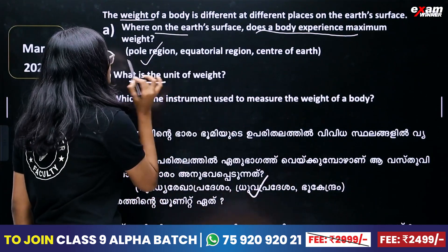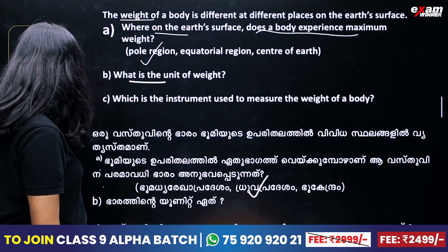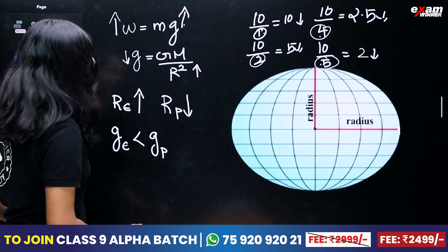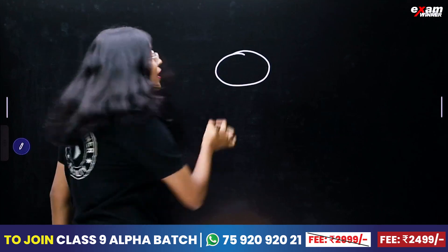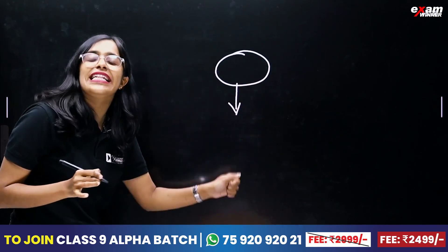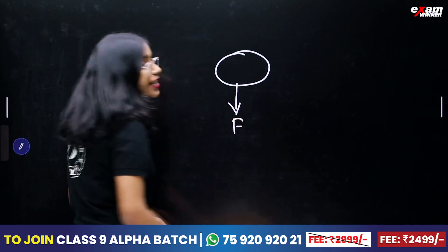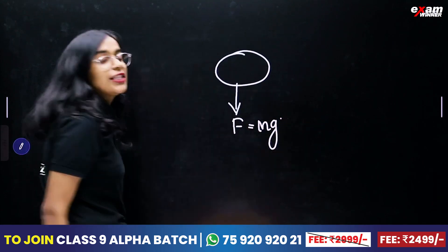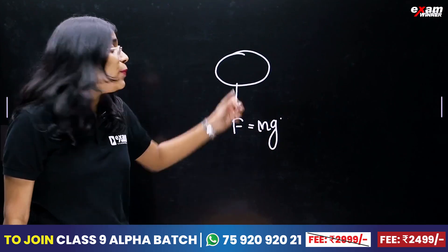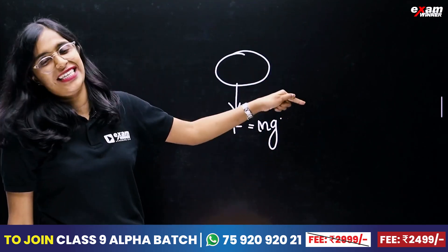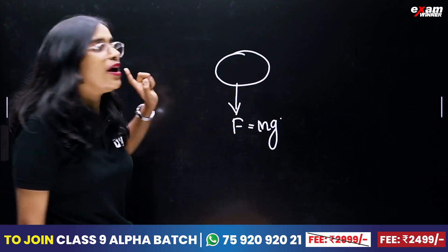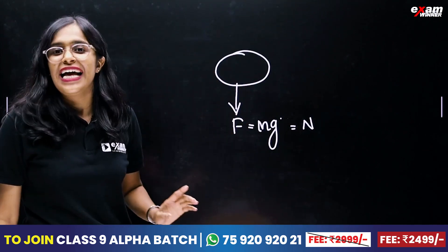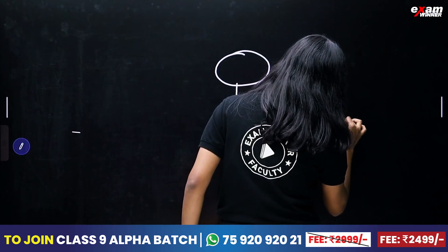What is the unit of weight? Weight is the force exerted by the Earth on a body. Force F is equal to M into G. The unit of weight is Newton. Newton is equal to N.